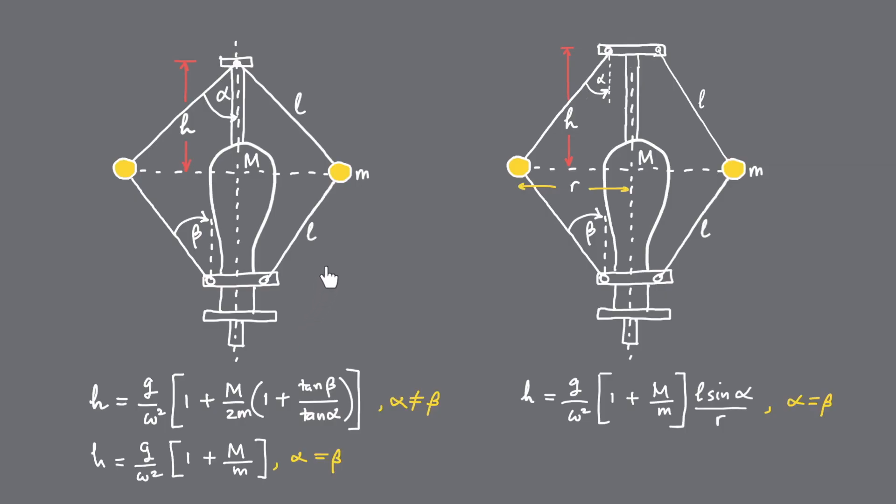In summary, for a porter governor, if the connections of the link at the bottom and at the top are not in line, H can be given by the following equations. This is a general equation where angle alpha and beta are not the same. If alpha and beta are the same, we will have a nice equation. The second one is where the bottom and top link are in line, and in this case alpha equals beta. The equation is the same as before but multiplied by the term L sine alpha over the radius of rotation R.